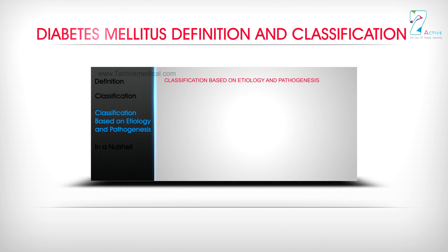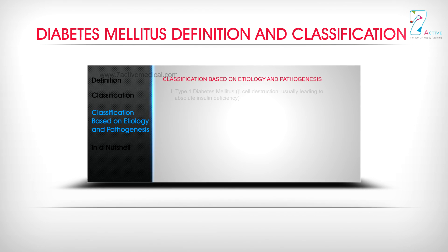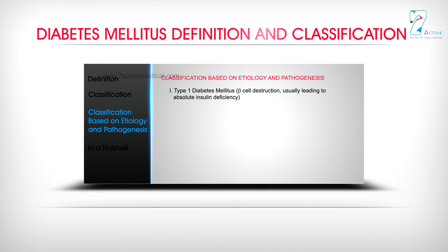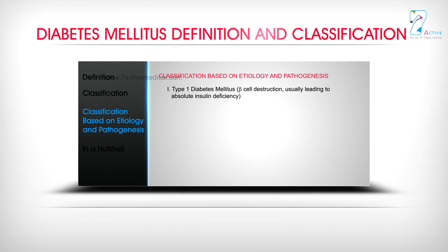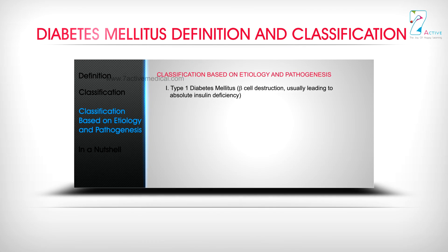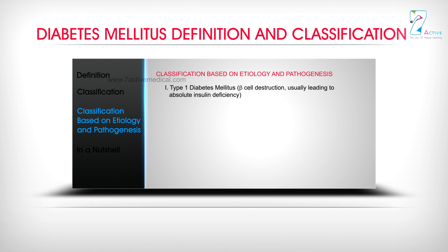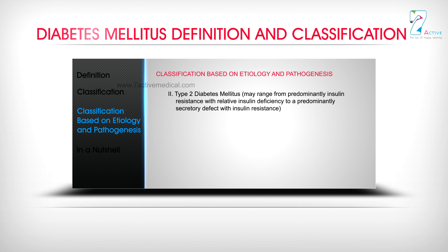Classification based on etiology and pathogenesis: Type 1 diabetes mellitus and Type 2 diabetes mellitus. Type 2 diabetes mellitus may range from predominantly insulin resistance with relative insulin deficiency to a predominantly secretory defect with insulin resistance.